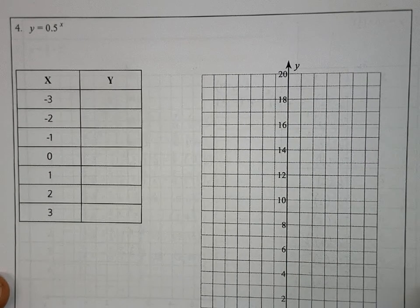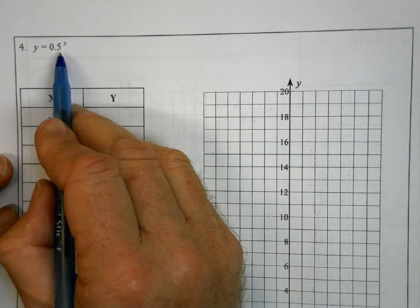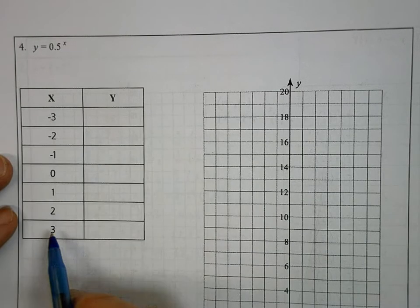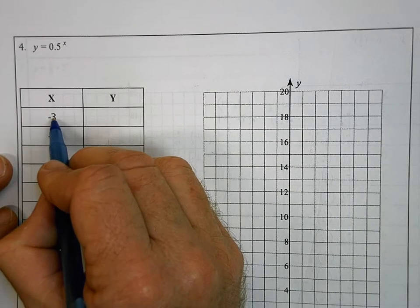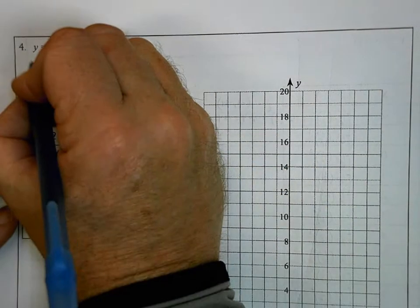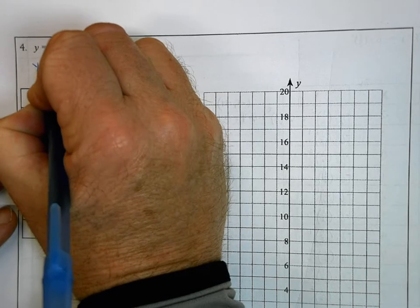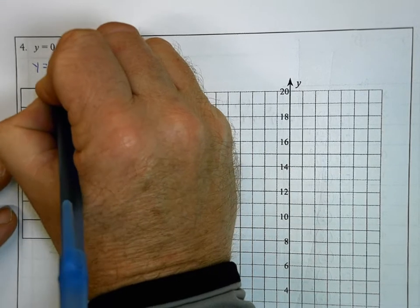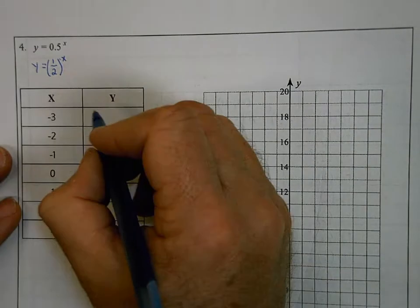This is number four from worksheet two for Math 1. We're going to graph the function y equals 0.5 to the x power. We already have our table set up with pre-chosen points. We're going to substitute each x value into the function and evaluate for y. Because I don't want to deal with decimals, I'm going to change 0.5 to one-half, and rewrite the function as y equals one-half to the x power.